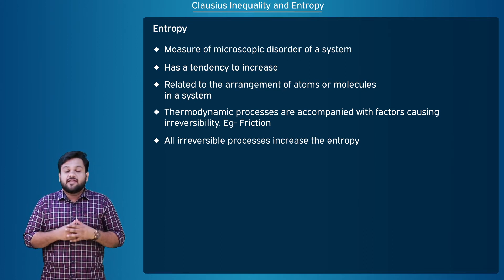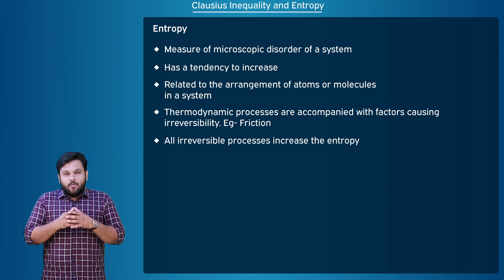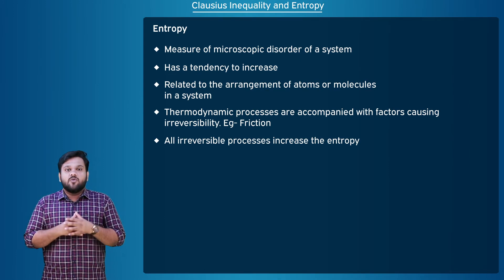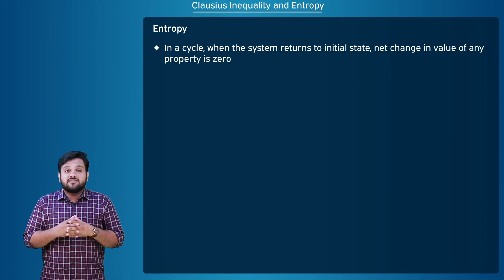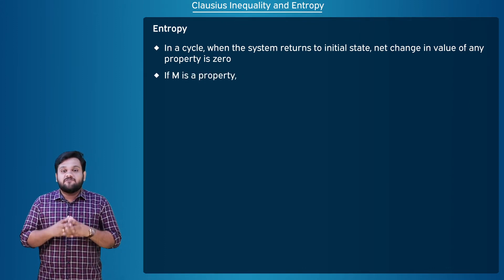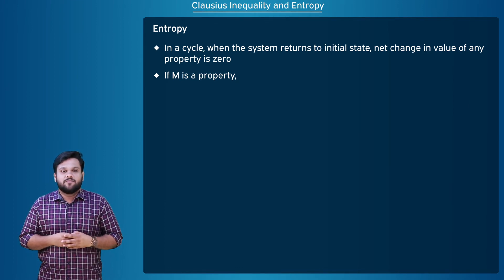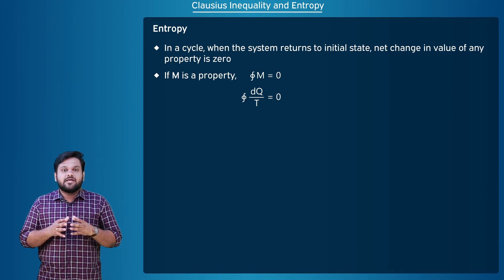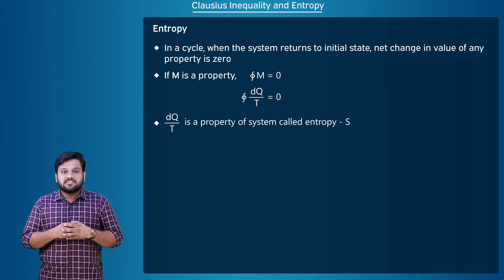This is applicable to the system and its surroundings. The universe consists of the system and the surroundings. Most processes in nature are also irreversible, and hence the entropy of the universe increases. In a cycle, when the system returns to its initial state, the net change in value of any property is zero. Consider the property as a function m — the cyclic integral of any property of the system is zero. Since the cyclic integral of dQ/T equals zero for a reversible process, dQ/T is a property of the system, and this fact was discovered by Clausius.